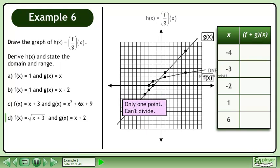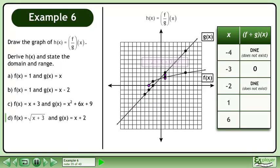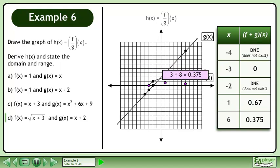The first point only exists on the graph of g, so we can't divide — record does not exist in the table. Divide the y-values of the next point to get 0. 1 divided by 0 is undefined, so record does not exist in the table. 2 divided by 3 rounds to 0.67, and 3 divided by 8 is 0.375.